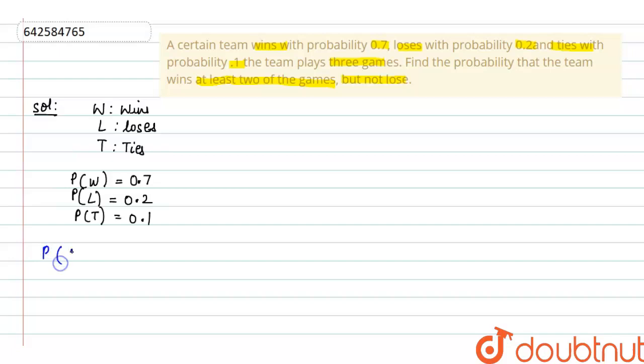We have to find the probability team wins at least 2 games but not losses. So, we can say the probability of win, win, tie plus probability of win, tie, win plus probability of tie, win, win plus probability of all 3 matches are win.